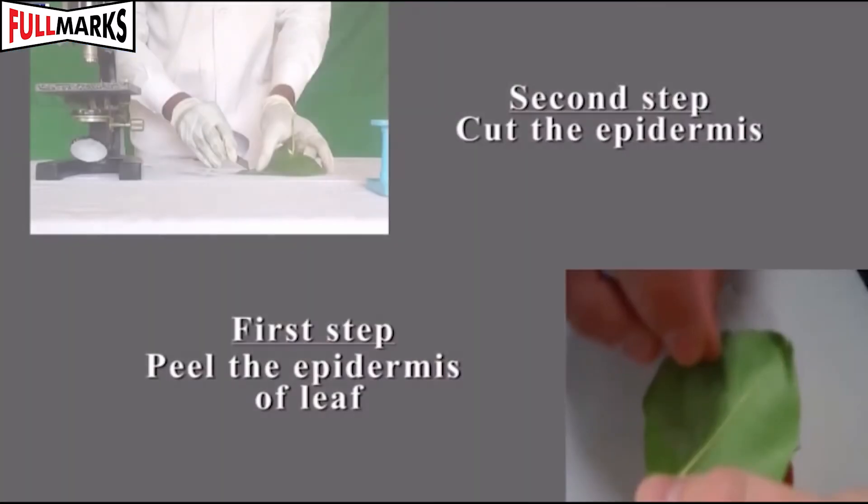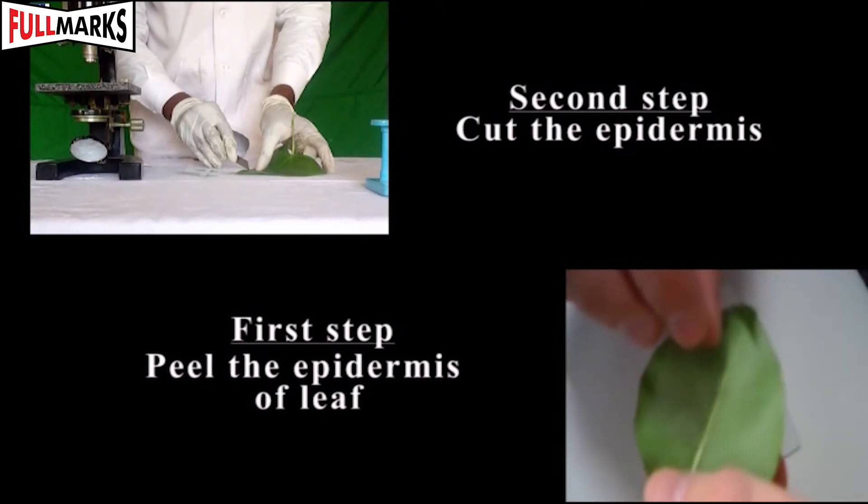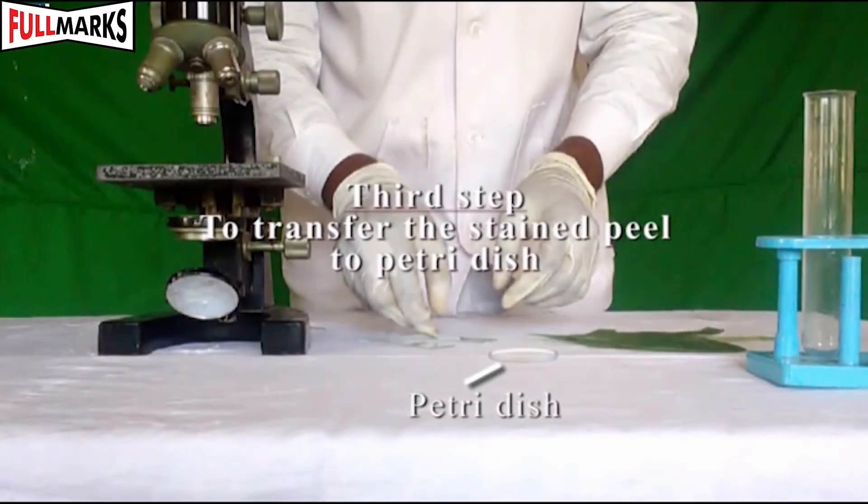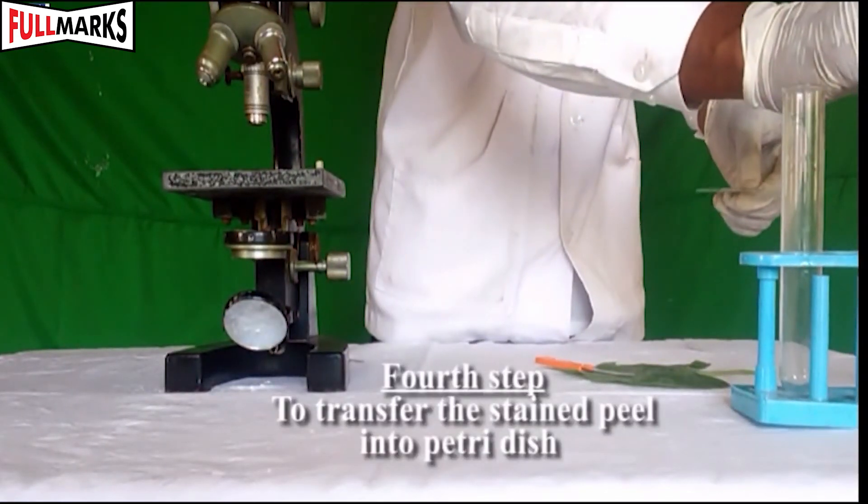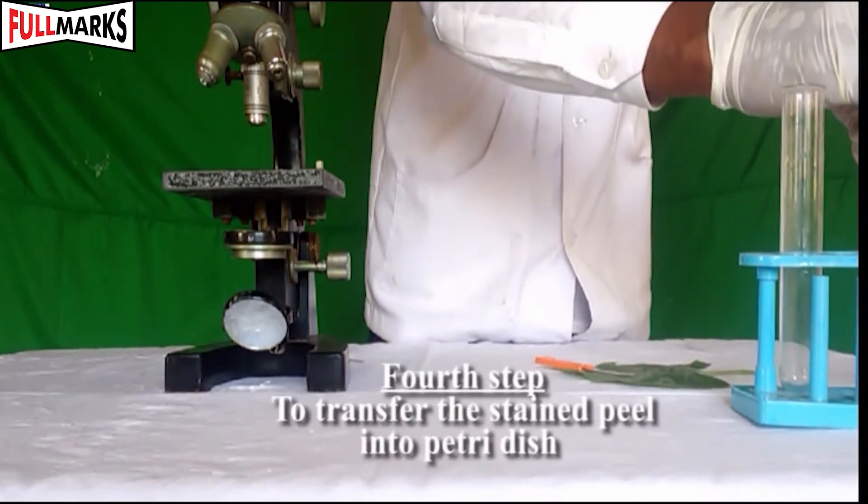Procedure: Take a freshly plucked leaf. Stretch the leaf with its dorsal part facing upward. Cut the epidermis and put it in a Petri dish. Take a watch glass, add few drops of water and a drop of stain in it.